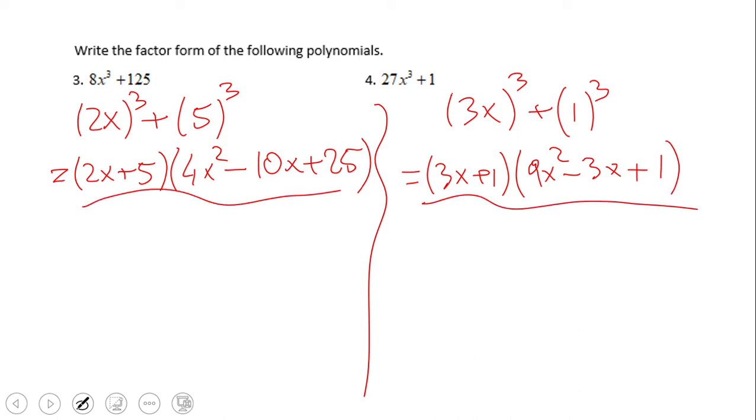If you ended up with (3x + 1)(9x² - 3x + 1), that's wonderful.